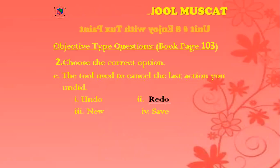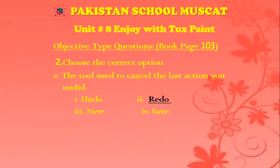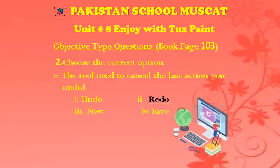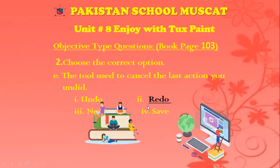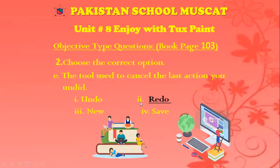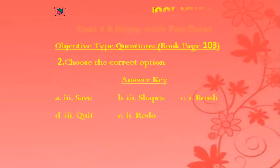Now for part E: which tool is used to cancel the last action? You use undo to remove an effect, and to cancel the effect of undo, which option do you use? You can use the redo option. The correct answer is the second option of part E — redo.